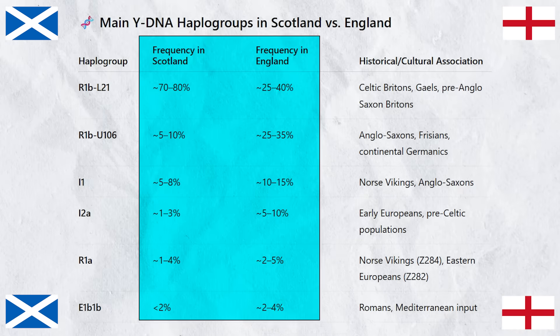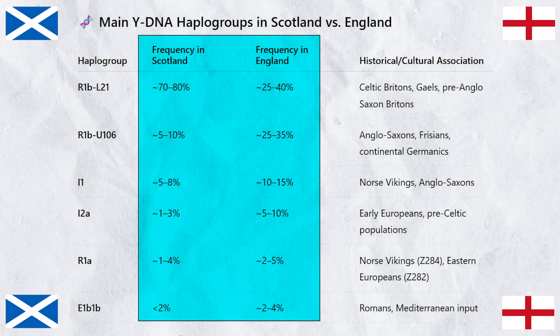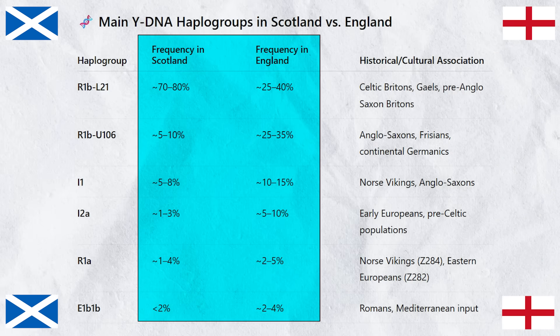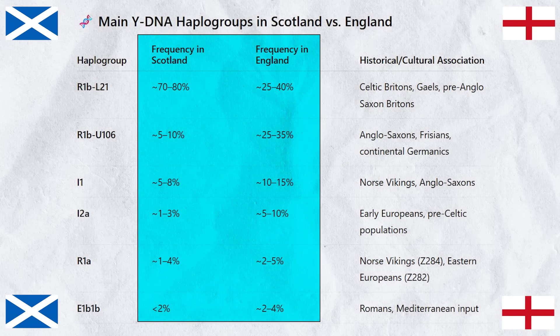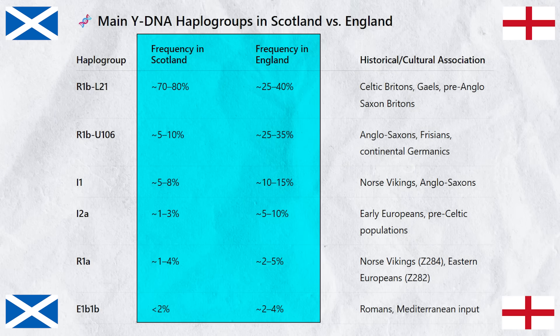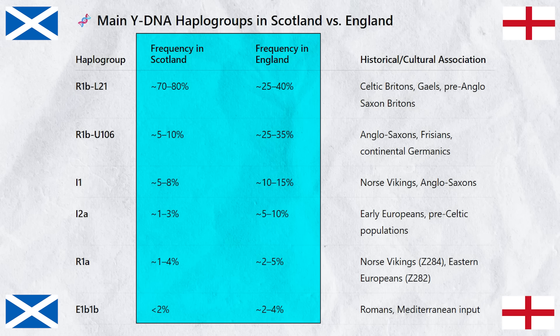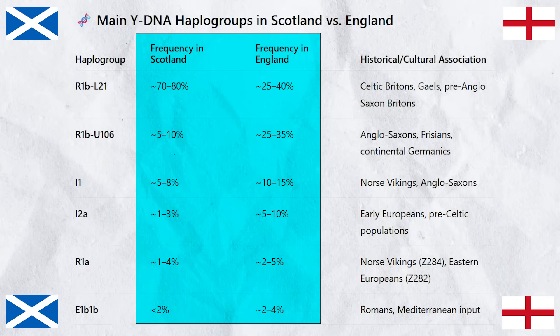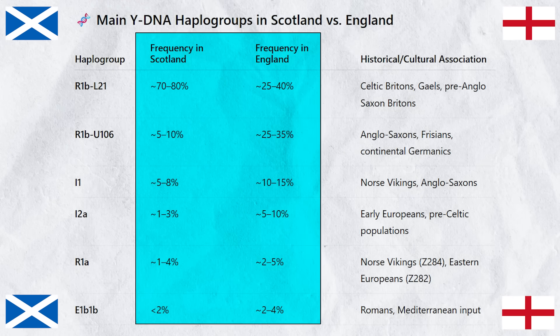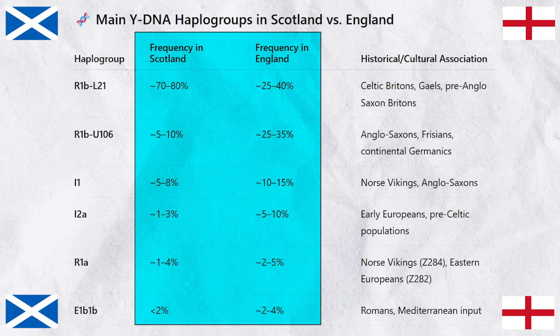England also has slightly higher levels of I1, reflecting the fact that England has more Northern European ancestry in general, as I1 is common in Scandinavia as well as Northern Germany and Northern Europe overall. It is thus linked to both the Vikings and the Anglo-Saxon migrations, but the main driver of higher rates in England is the larger Anglo-Saxon component, as the Viking influence was similar in both countries.